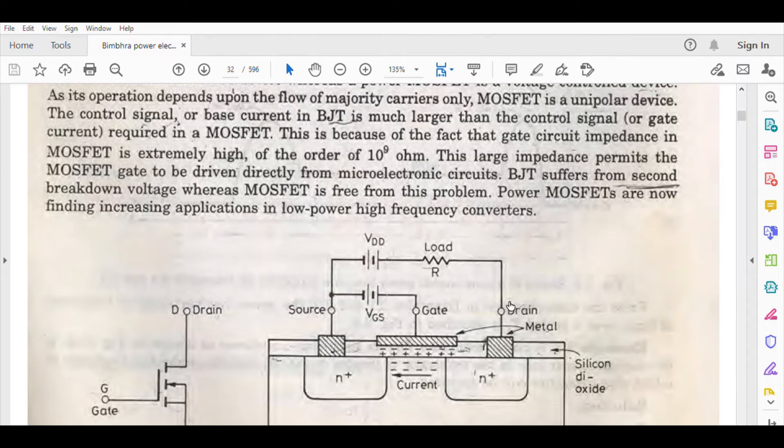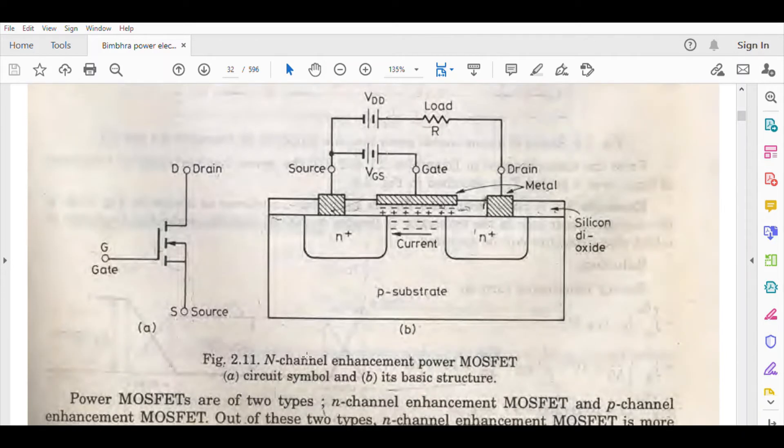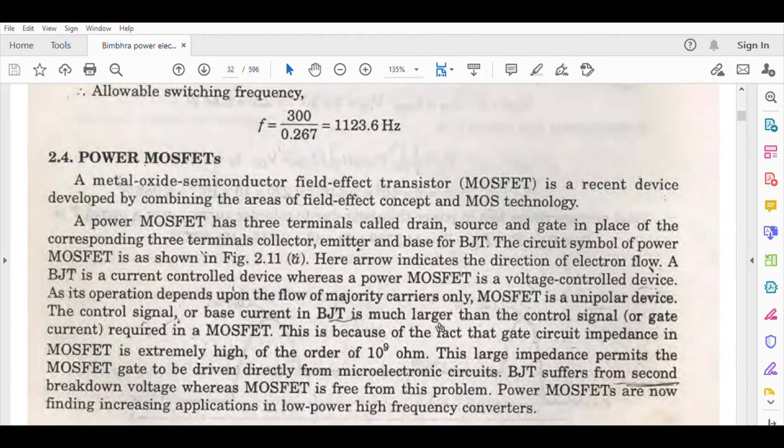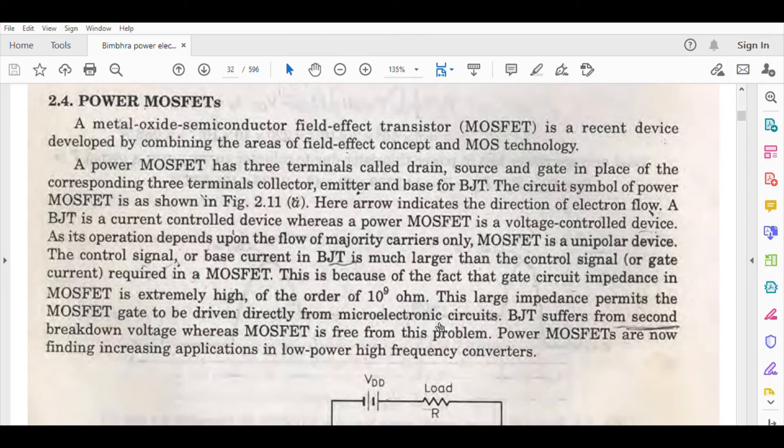Now I'll explain. Arrow indicates direction of current flow. You know BJT is a current-controlled device. Power MOSFET is a voltage-controlled device - nothing new. As its operation depends upon the flow of majority carriers only, MOSFET is a unipolar device. BJT is bipolar, MOSFET is unipolar.